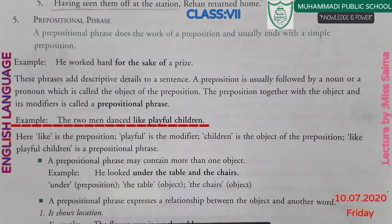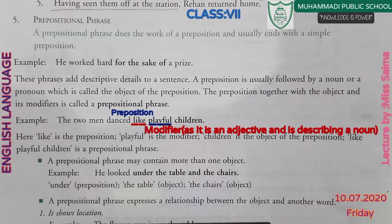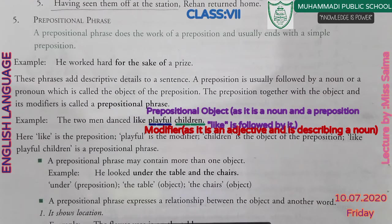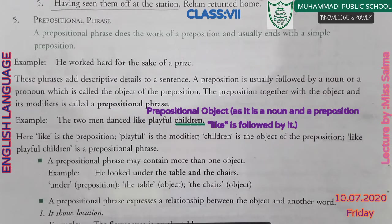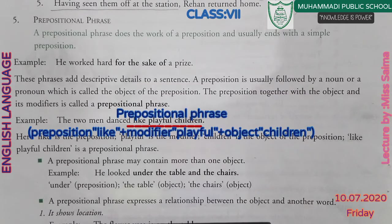Modifiers are words that describe or give information about a noun. For example: 'The two men dance like playful children.' In this sentence, 'like' is the preposition, 'playful' is the modifier, 'children' is the object of the preposition, and 'like playful children' is the prepositional phrase.